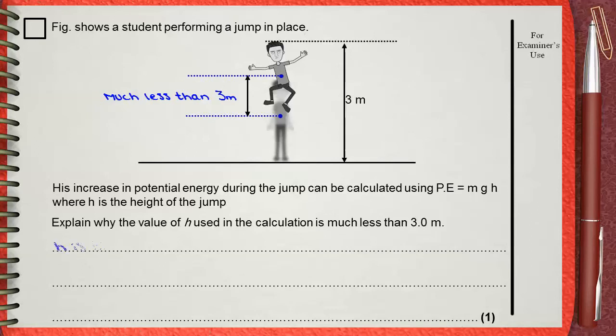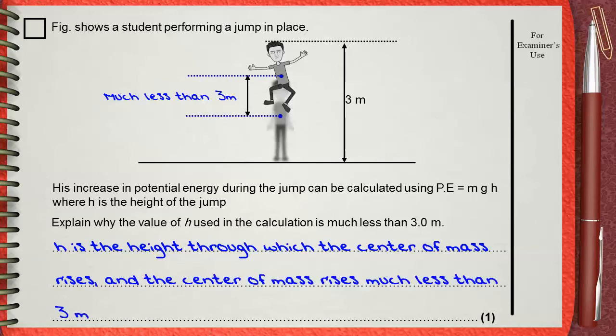So we say that H is the height through which the center of mass rises, and the center of mass rises much less than 3 meters. This is the single mark of the question.